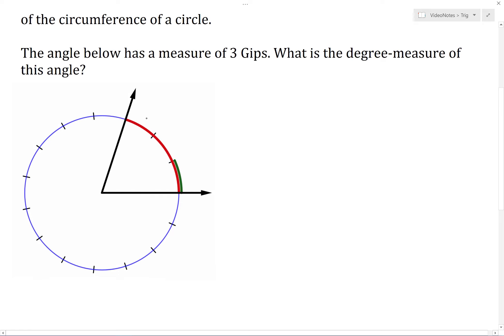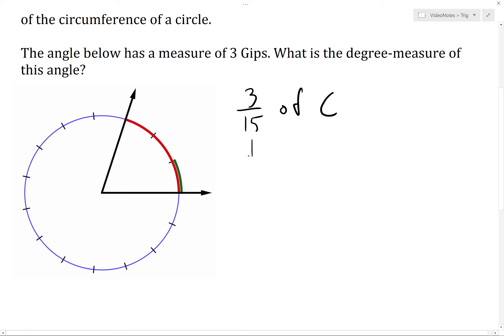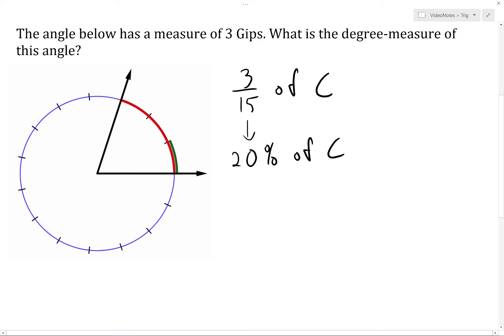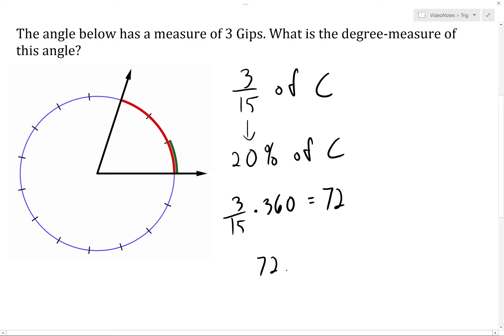There are 15 GIPs in the full circumference, and this angle's rays cut off 3 of those GIPs. So the angle's rays subtend an arc that is 3/15ths of the circumference of the circle. If you compute 3/15ths, you get 0.2, which is 20%. So the angle's rays cut off 20% of the circumference. Since there are 360 degrees in one full circumference, the angle's rays cut off 3/15ths of those 360 degrees, which is 72 degrees.